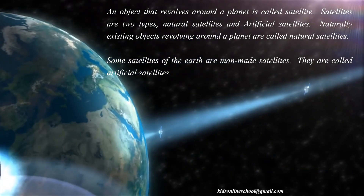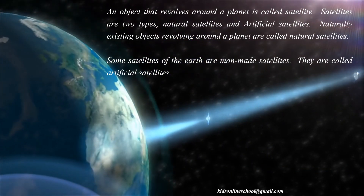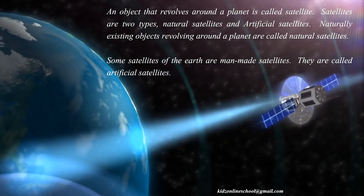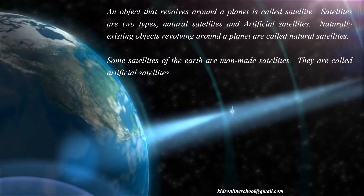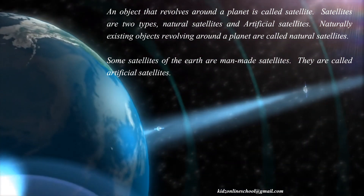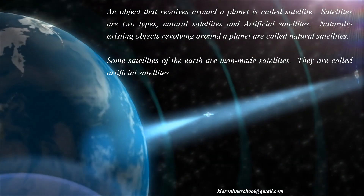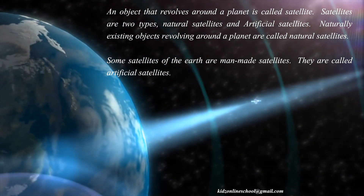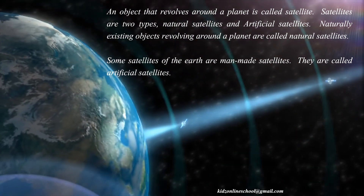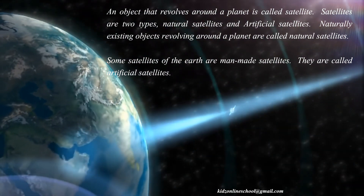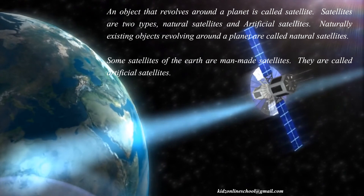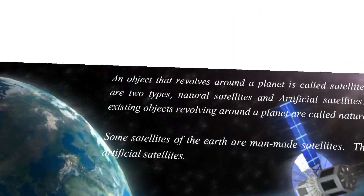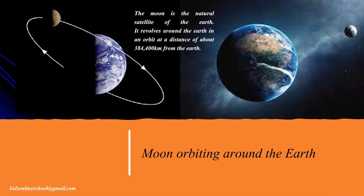An object that revolves around a planet is called a satellite. Satellites are of two types: natural satellites and artificial satellites. Naturally existing objects revolving around a planet are called natural satellites. Some satellites of the Earth are man-made, and they are called artificial satellites. The Moon is the natural satellite of the Earth.